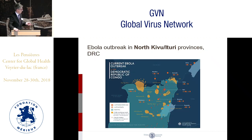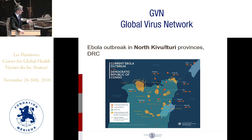A map of the area shows red points indicating security incidents and yellow areas under control of rebels within North Kivu province in DRC, alongside Ebola cases. This mixture of insecurity and active outbreak makes it very difficult to operate in this region.